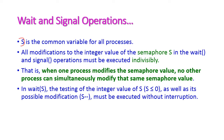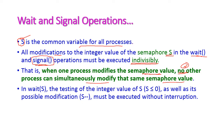The integer variable S, otherwise called the semaphore, is a common variable for all processes — that is, S is a shared variable. If there is any modification in S by using the wait or signal operation, that must be executed indivisibly. Indivisible means that if one process modifies the semaphore value, no other process can simultaneously modify the same semaphore value. That means the wait and signal operations are non-preemptive — without interruption, these two operations must be executed.